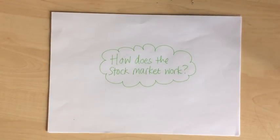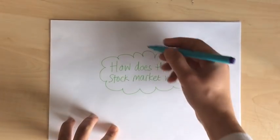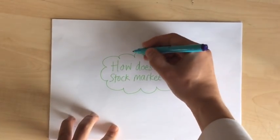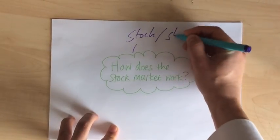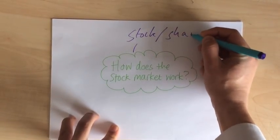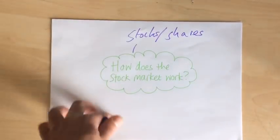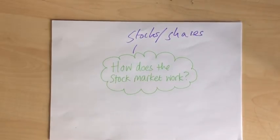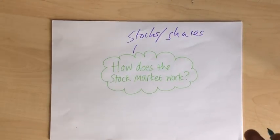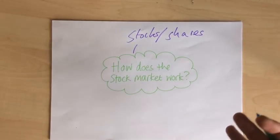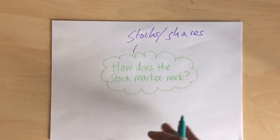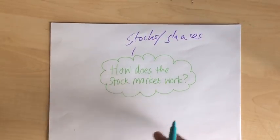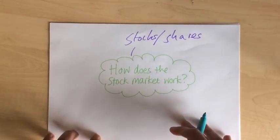Firstly, we need to know how does the stock market actually work. So if you buy a stock — that might also be called buying a share, it means exactly the same thing — that is a share of a company. So you could buy a share today in Tesco's or McDonald's. In those days, they might have bought a share in Ford Motor Company.